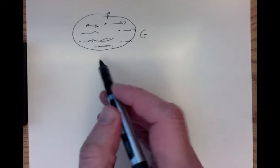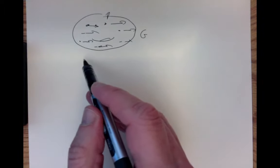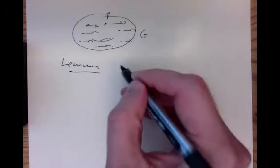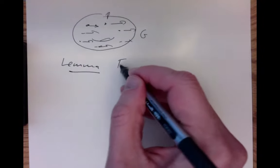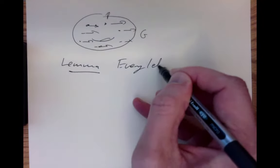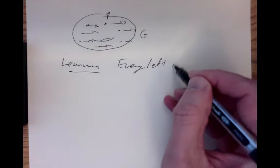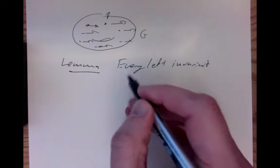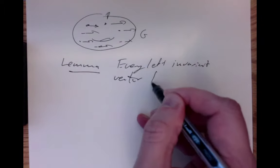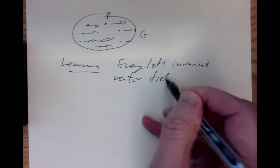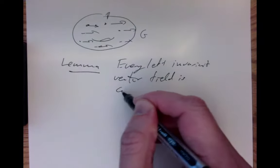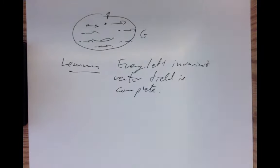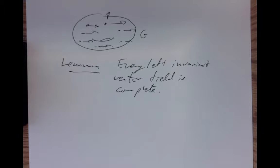We want to understand the behavior of those vector fields. The first result is that every left-invariant vector field — and the same holds for right-invariant — every left-invariant vector field is complete. What does it mean for a vector field to be complete? It means that you can flow along it forever.